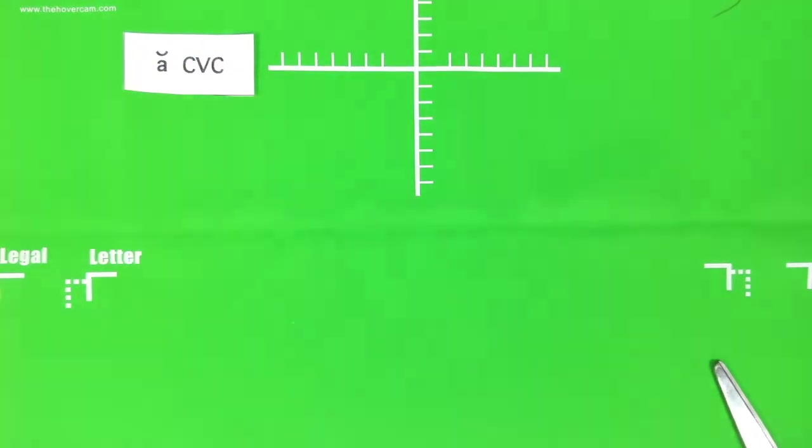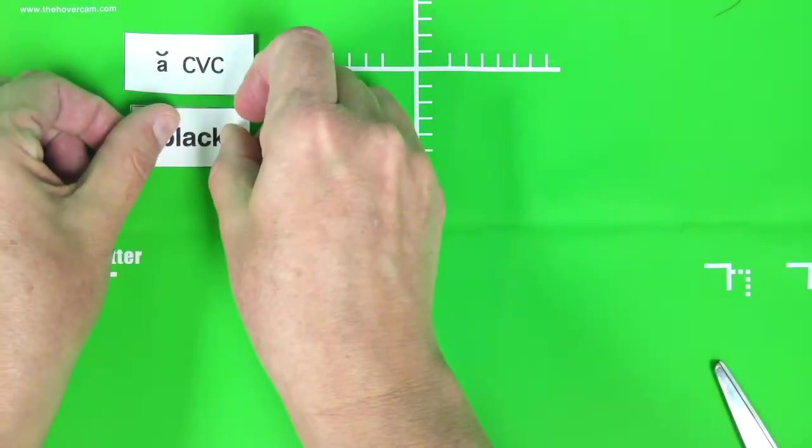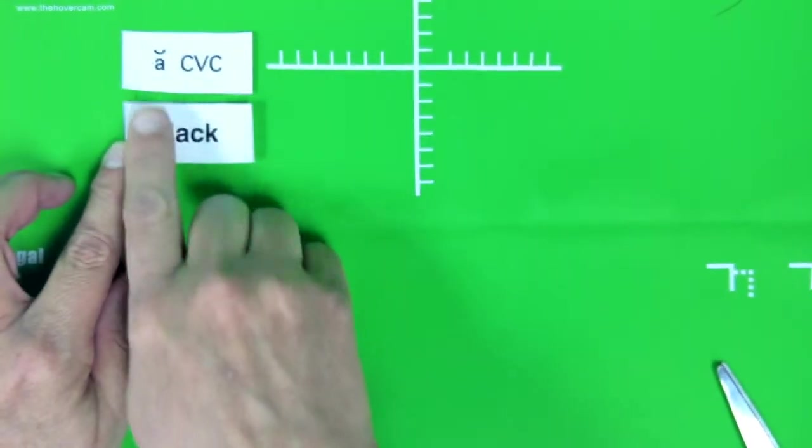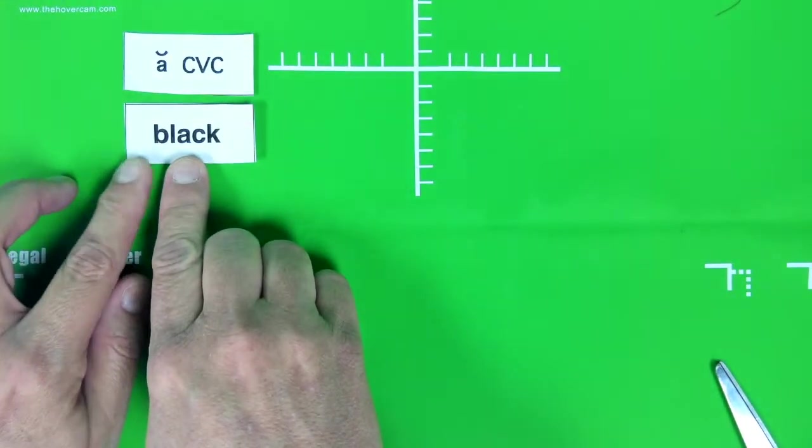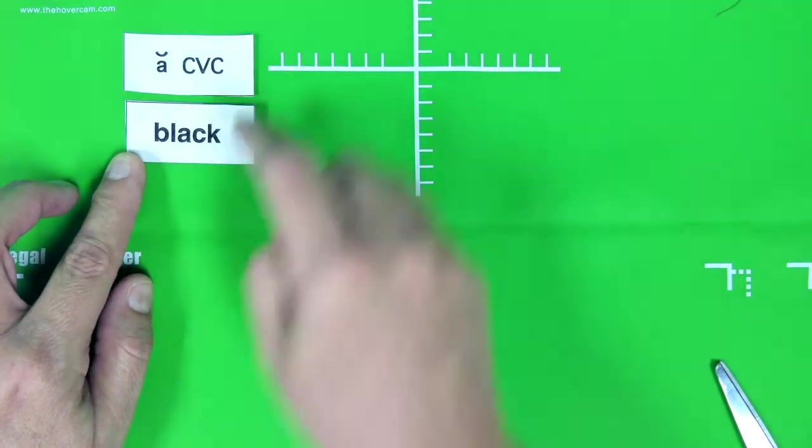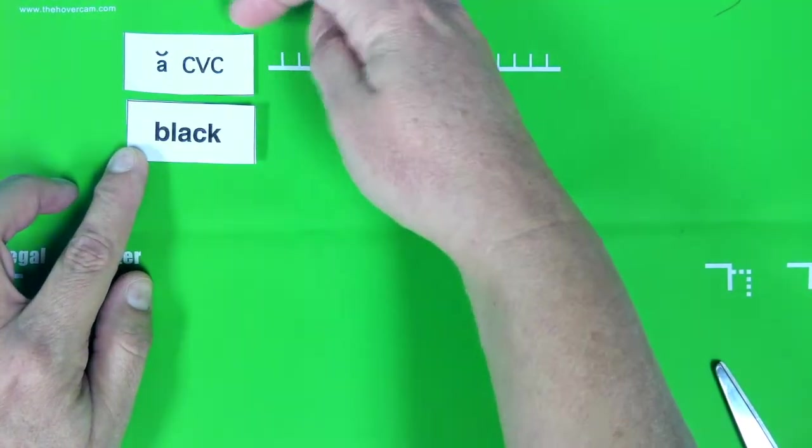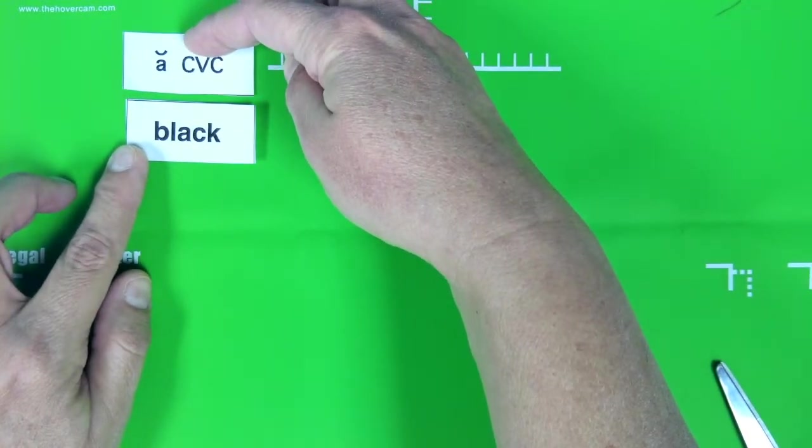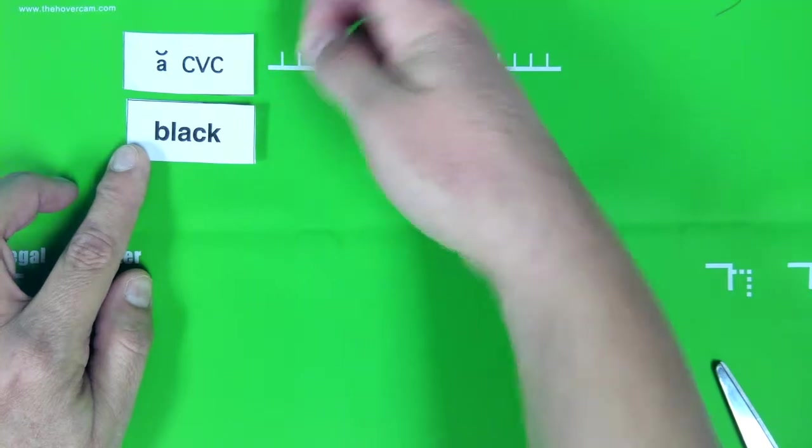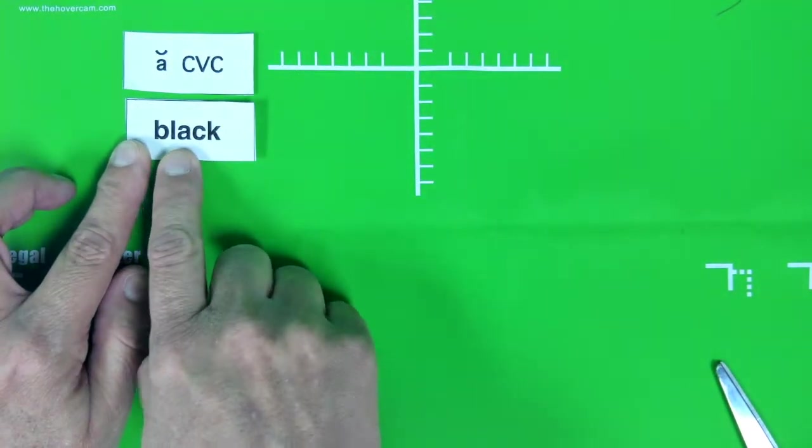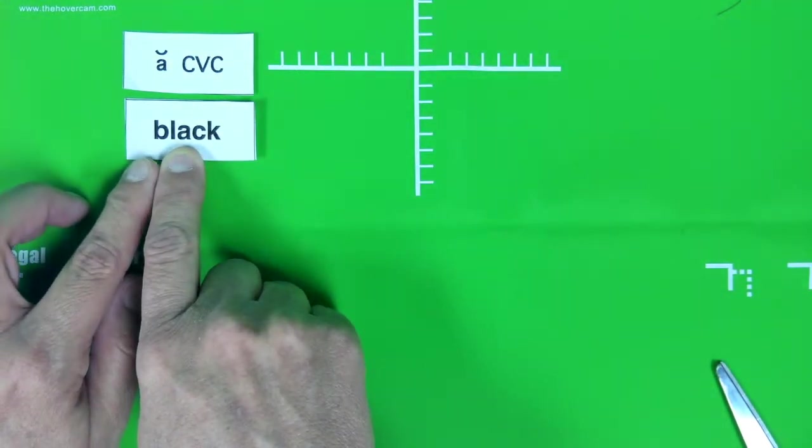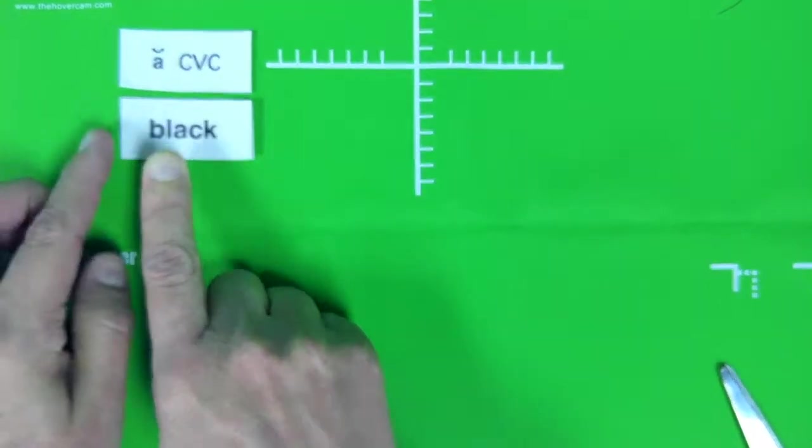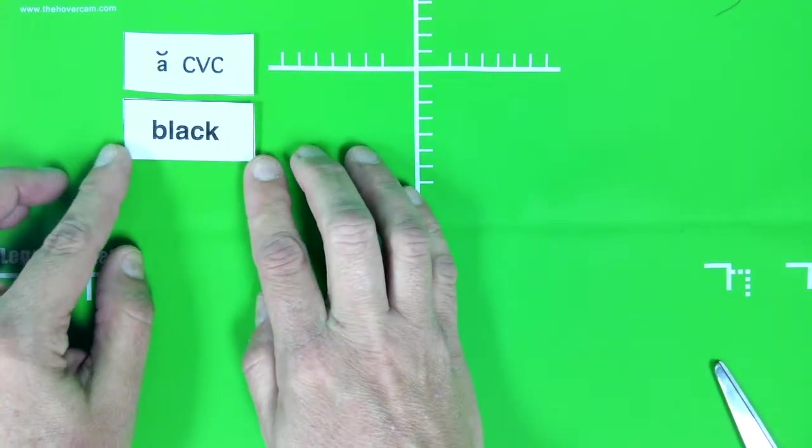The first anchor word that we have is black. Let's look at black. Black has the short A sound. Black. And see up here it says CVC. That means consonant, vowel, consonant. Remember that the vowels are A, E, I, O, and U. If you look in the word black, there's the vowel A and on either side you have a consonant. You have an L and a C. This is a consonant, vowel, consonant word.